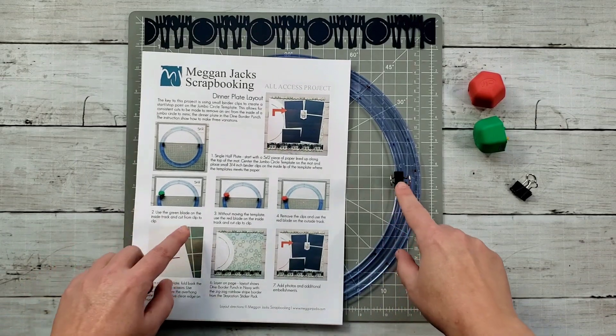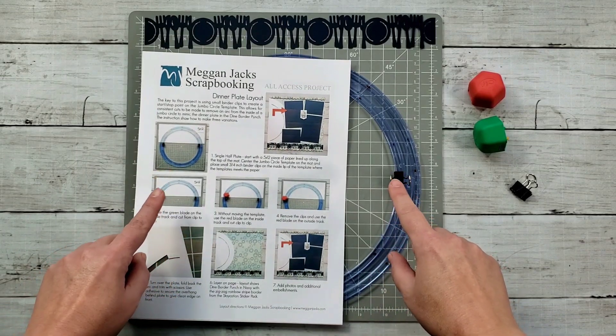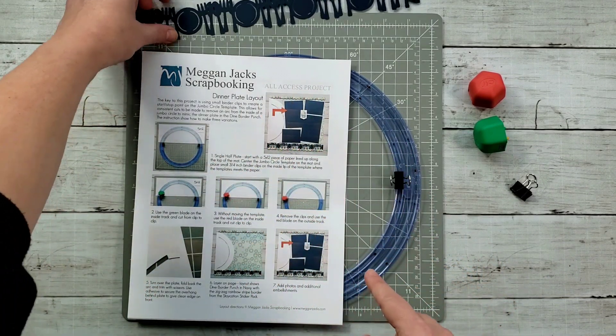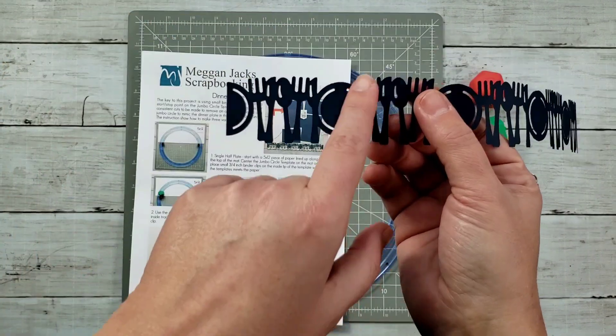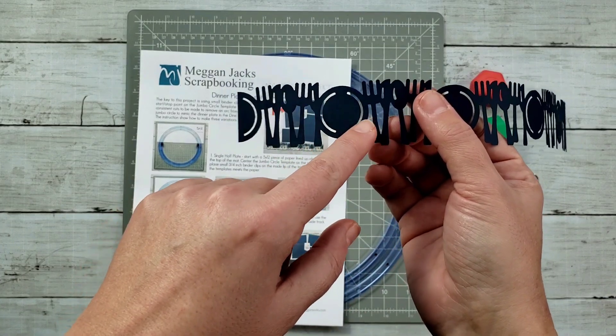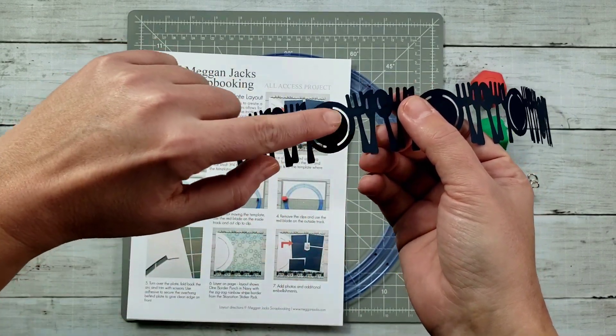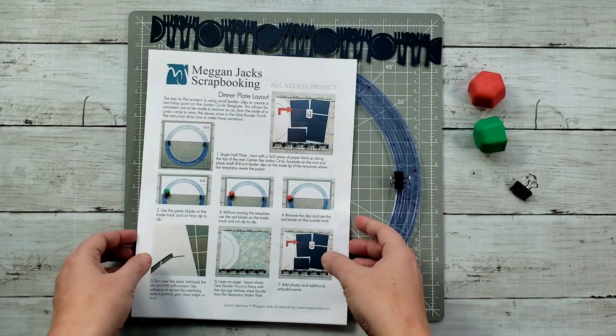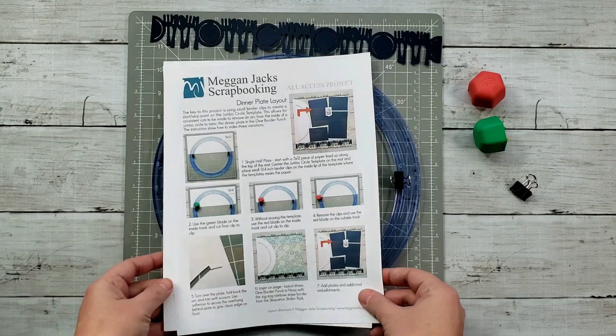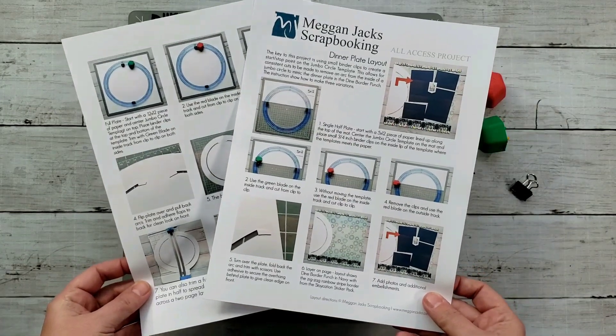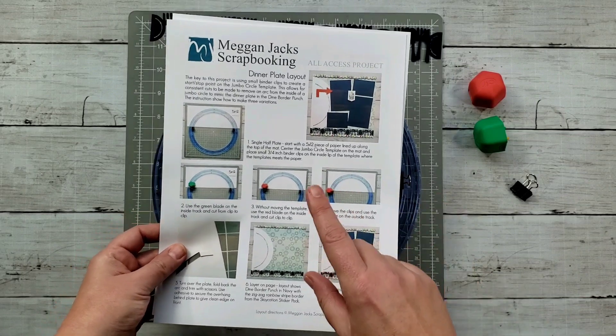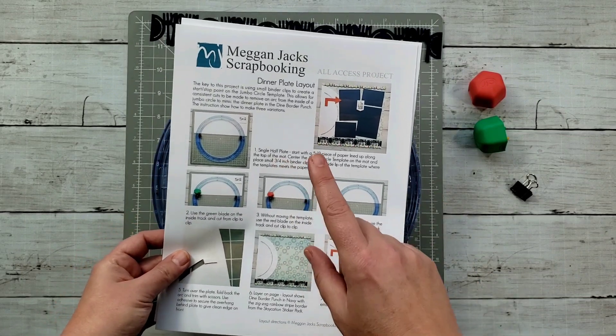We're going to use these binder clips to create a start and a stop point, which is going to give us that uniform arc that is iconic or a signature feature of the dinner plate and really gives you that look of having the lip of the plate versus the center of the plate. From the all-access group, you have the download available with the directions. I do show you three options here. So we're going to start off with the first option, which is a half dinner plate.